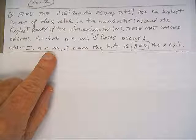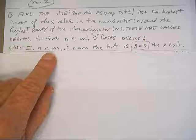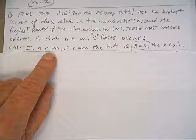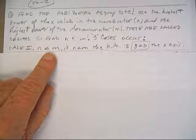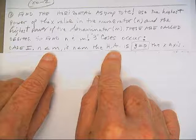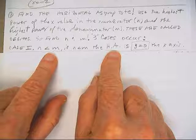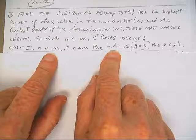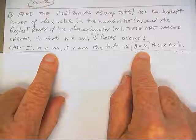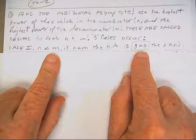n might be smaller than m. So this is the biggest power in the top is smaller than the biggest power in the bottom. So if n is less than m, then the H.A. stands for, that's not the joke of the day, that's horizontal asymptote. It's always y equals zero is the horizontal asymptote when you have case one.